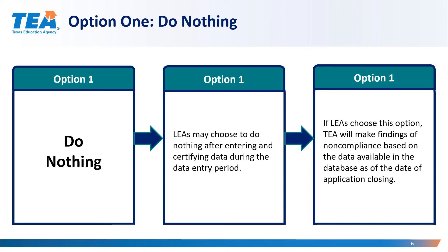LEAs choosing Option 1 will do nothing during the clarification period. Findings of noncompliance will be based on the data entered and certified in the SPP application during the data entry period and available in the database as of the application's August 13, 2021 closing date.